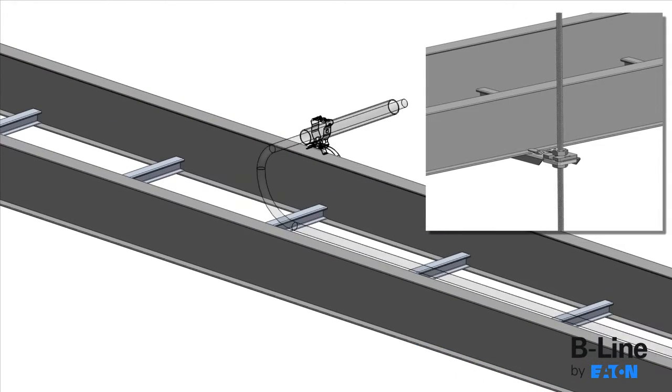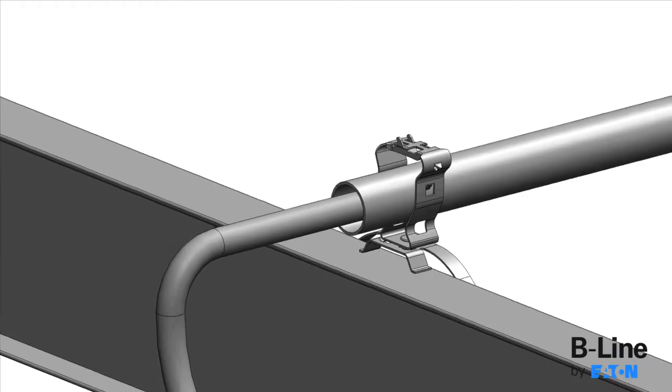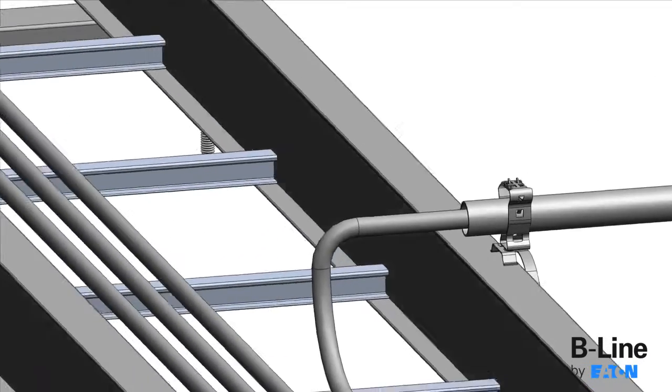The trapeze solution is designed to support B-Line's labor-saving Buzznut solution or traditional hex nuts and square washers.